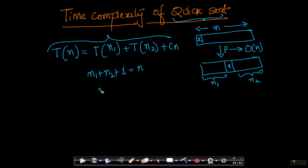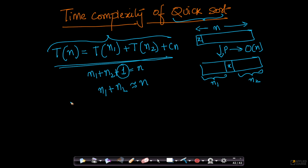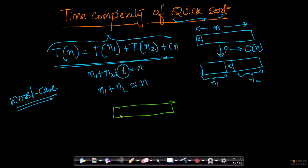Roughly, you can ignore the 1, so n1 plus n2 is roughly equal to n. This is the recurrence relation we have. Now let us see the worst case first, and then we will come to the best cases. The worst case will happen if — imagine this is my original array of size n. After the partition function, imagine I break this array in a certain way.